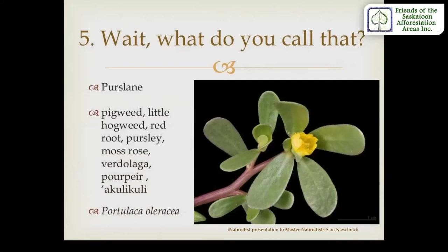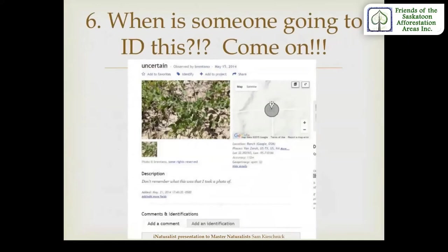There are so very many different common names for organisms. There can be many different regional names for the same plant. However, the taxonomic name remains the same throughout all the differences. The first name — Portulaca — is the genus name, and the second is the species name.